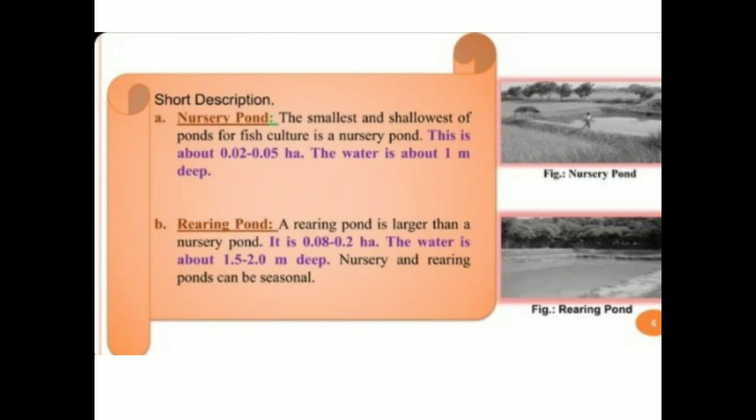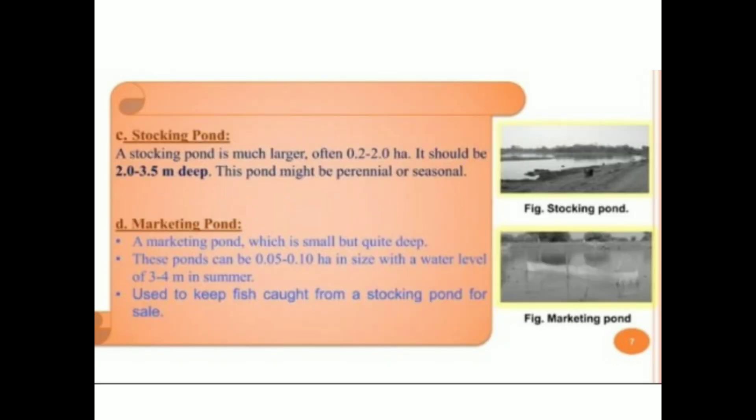Next is the rearing pond. A rearing pond is larger than a nursery pond; its size is about 0.08 to 0.2 hectare and the water depth is about 1.5 to 2 meters — greater than that of the nursery pond. Nursery and rearing ponds can be seasonal, depending upon the culture of the fish you are cultivating.